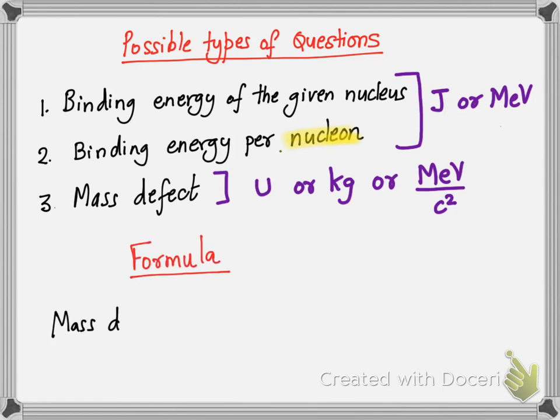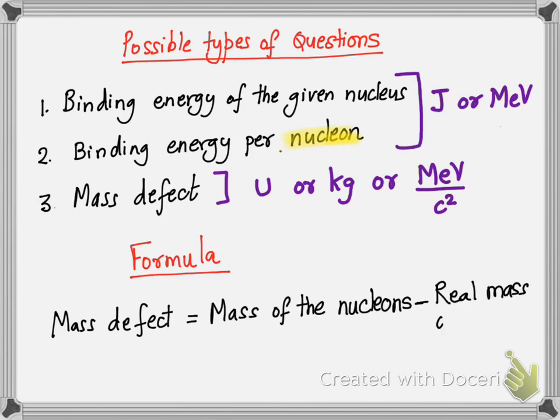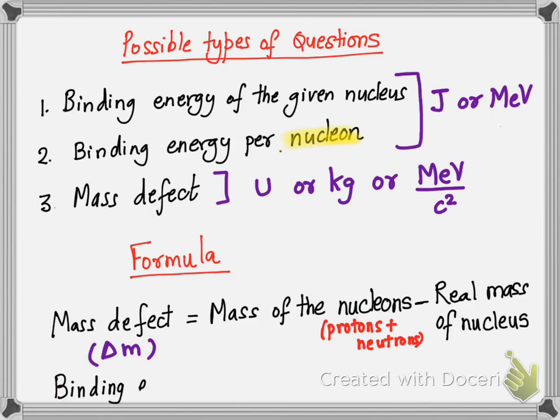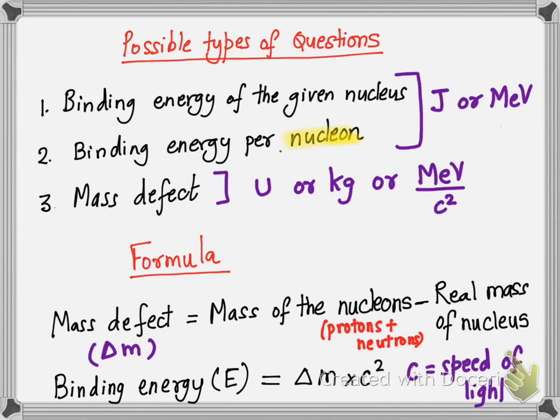The formula for calculating mass defect is: mass of the nucleons minus the real mass of the nucleus itself. Mass defect is represented by delta m. The formula for binding energy is E equals delta m multiplied by c squared, which is Einstein's famous equation, where c is the speed of light.